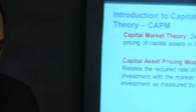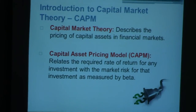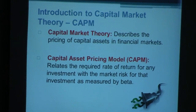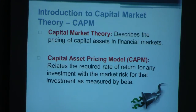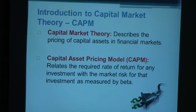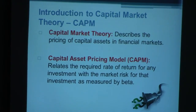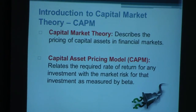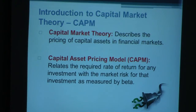Capital market theory basically tries to describe the prices of assets in the financial markets — your stocks, bonds, mutual funds, and so on. Why are they priced at what they are priced at? Capital market theories try to describe their innate, inherent nature towards the pricing model. The one pricing model we're going to discuss today is the Capital Asset Pricing Model, or CAPM for short. It relates the required rate of return for any investment with the market risk for that investment, as measured by beta.